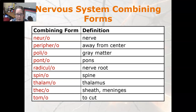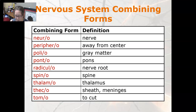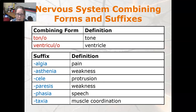Neuro is nerve, peripheral is away from the center, polio is gray matter, ponto is pons, radicular is nerve roots, spano is spine, thalamus, pico is sheath or meninges, tomo is to cut, tono is tone, and ventriculo is ventricle.